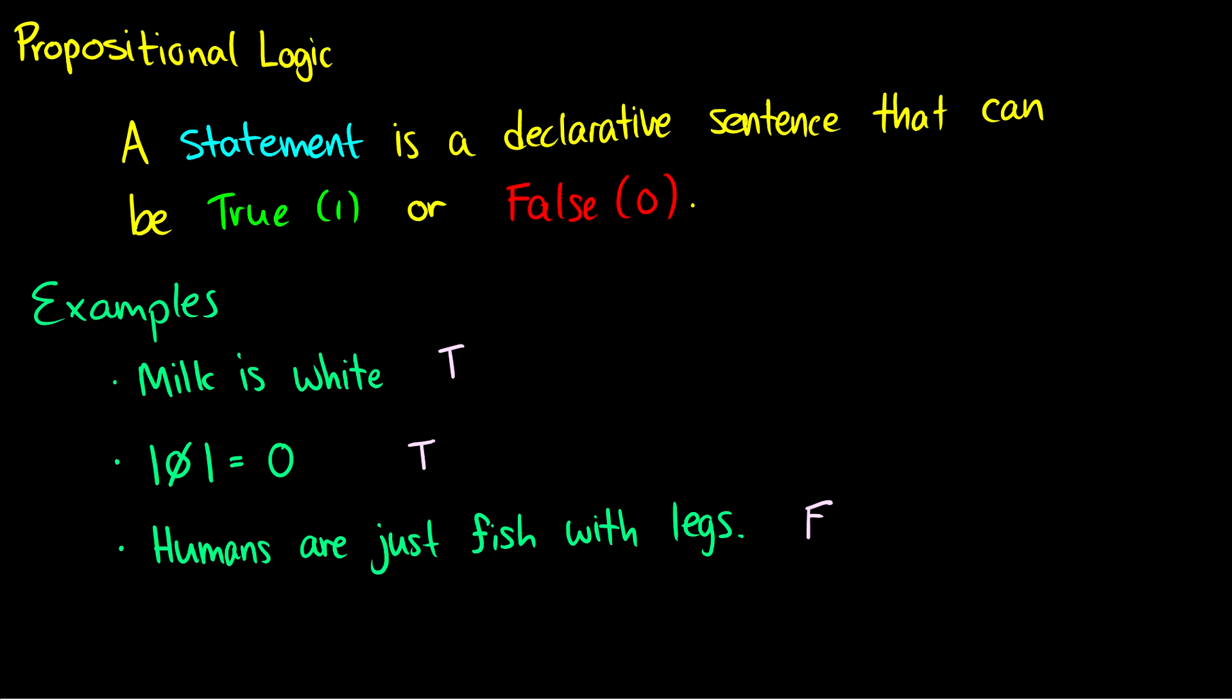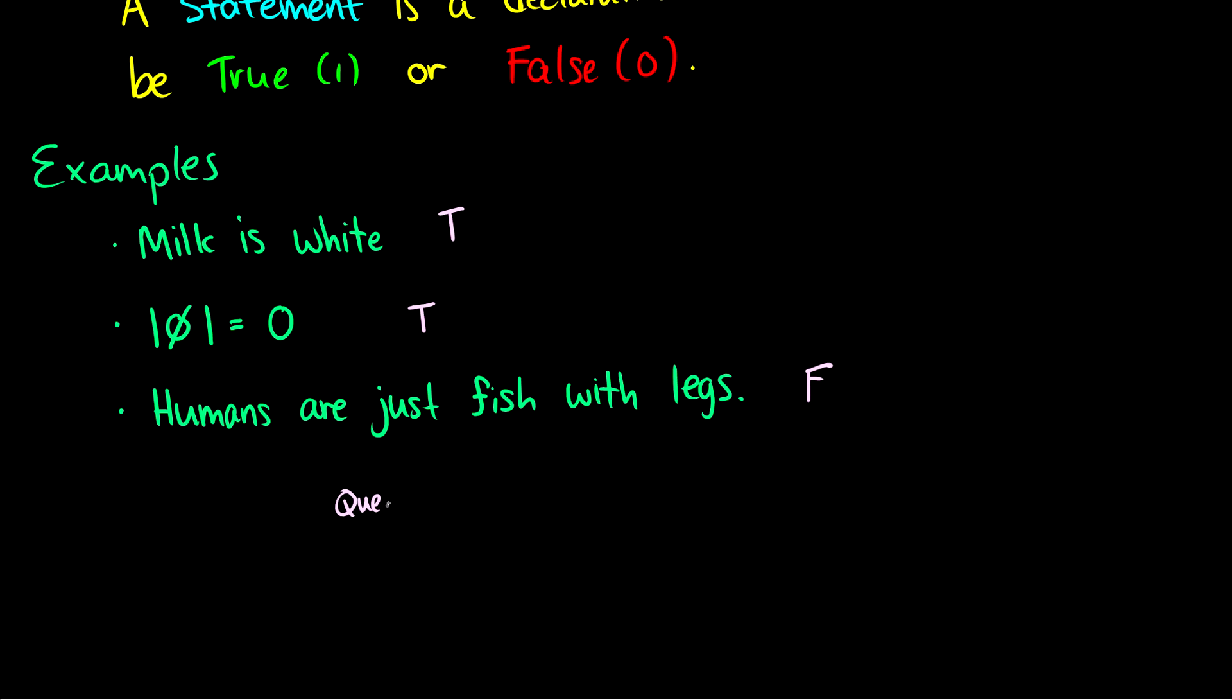But the point isn't whether or not these statements are true or false, but rather that they are statements, which means that in propositional logic, we can express them. We cannot express things like questions. For instance, questions cannot be true or false. Will you go to the store for me? True. Doesn't make any sense. The other things we can't call statements would be imperatives. An imperative is a command like kick me or kick him. Those can't be true or false. So when we talk about propositional logic, we're dealing with statements which are true or false.